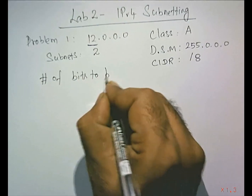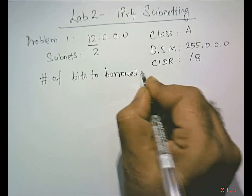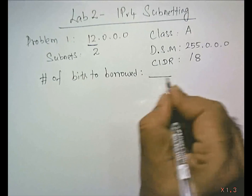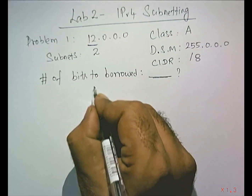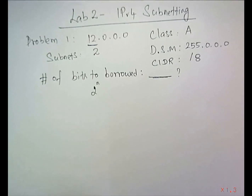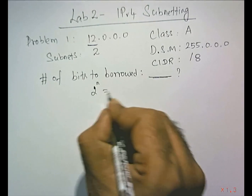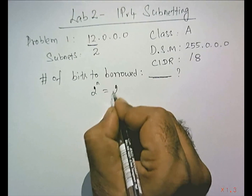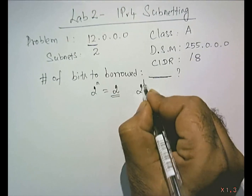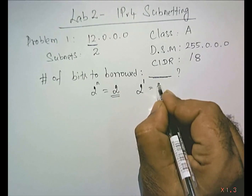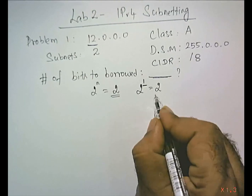How many bits do we have to borrow to do subnetting? We apply the formula 2 to the power of n. We need two subnets, so 2 to the power of 1 equals 2. If you borrow one bit, you can have two subnets.